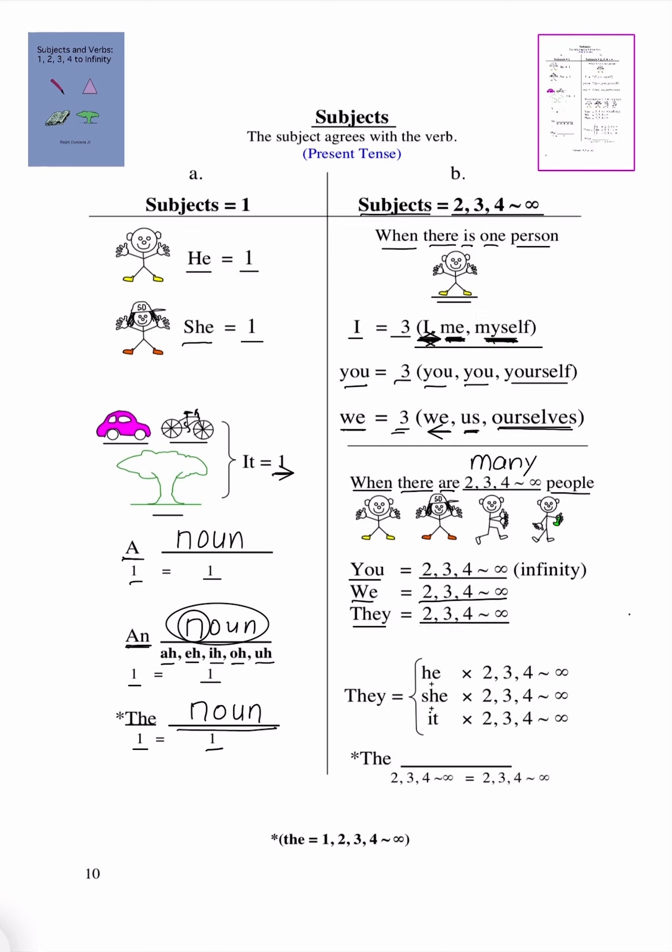And then, next, these are a combination. They could be any combination of he and she, or she and it, or he and it, or he, she, and it, or individually, he will have to be 2, 3, 4, or infinity people.